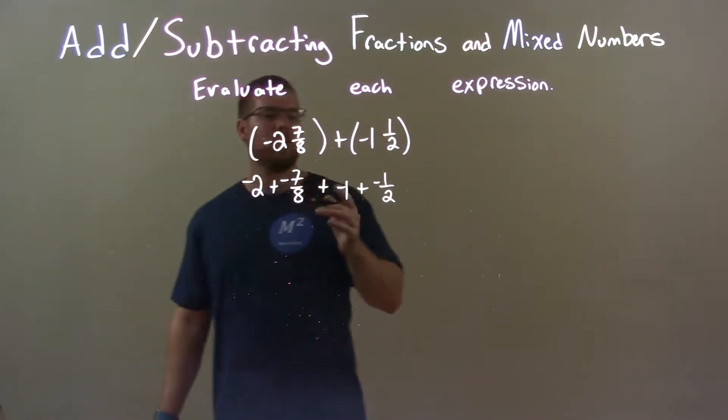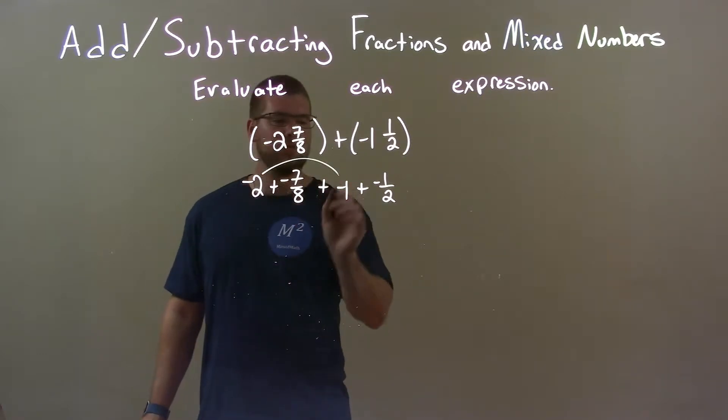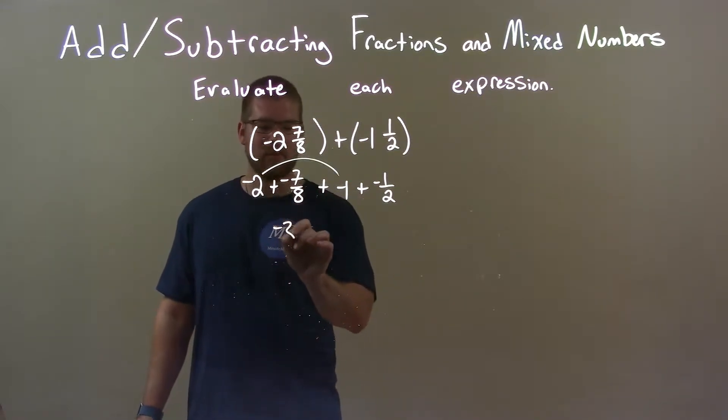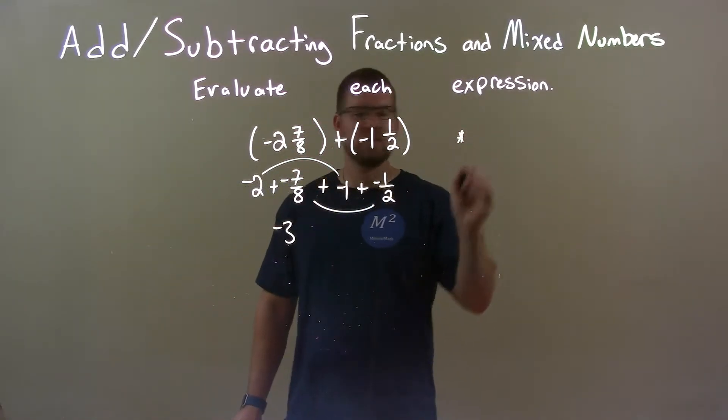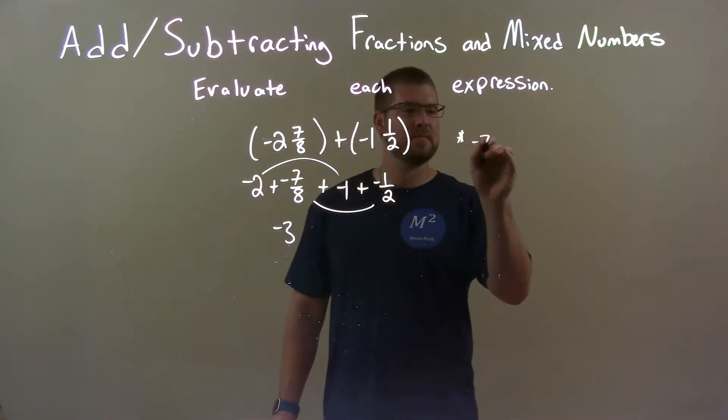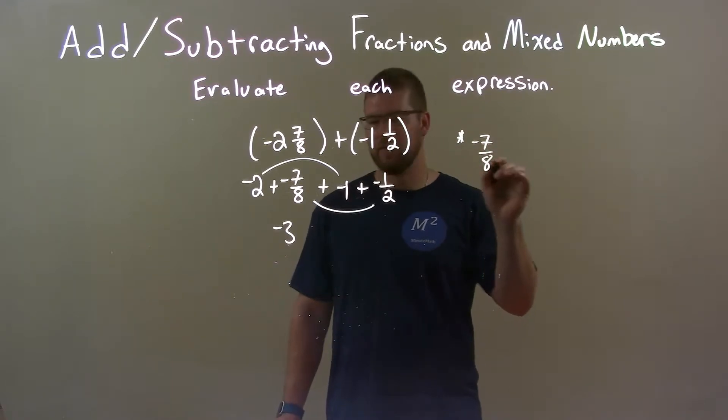Now, I'm going to add my whole numbers and my fractions. Negative 2 and negative 1 is a negative 3. But my fractions, when I add them together, I'm going to do that over here to show how they can be combined. Let's take a few steps here.